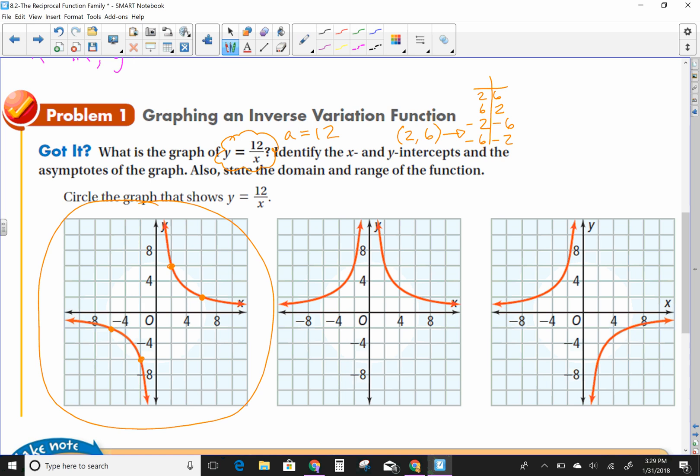So this first one is actually the graph that shows y equals 12 over x. And so the key, as you can see from our reciprocal function, is that these problems will always come up in opposite quadrants. So it could either be first and third, or it could be second and fourth. But the ones that we're doing in this lesson will never look like this. What else do we have to do here? It says identify the x and y intercepts.